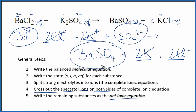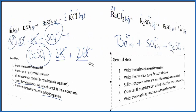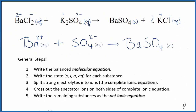Let me clean this up and we'll have a nice tidy net ionic equation for BaCl₂ plus K₂SO₄. This is our net ionic equation for barium chloride plus potassium sulfate. And this is Dr. B.